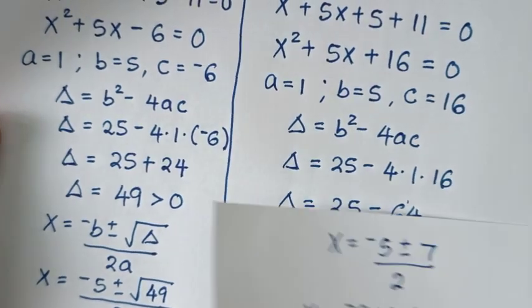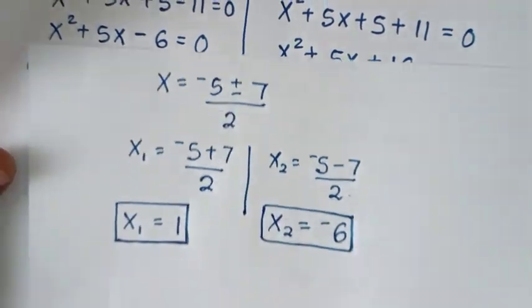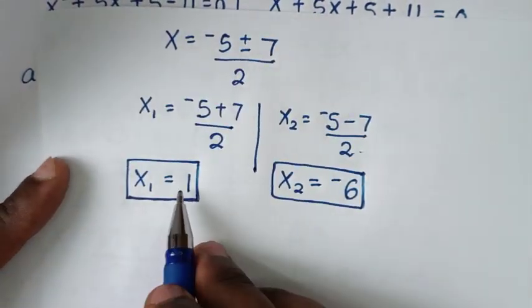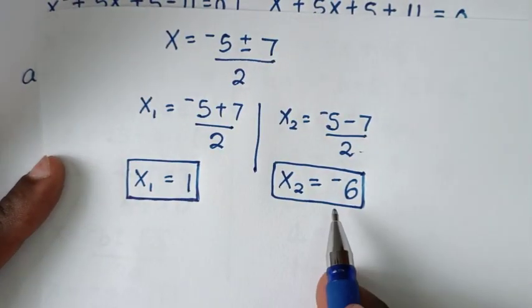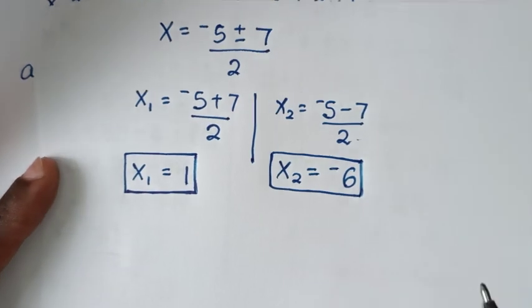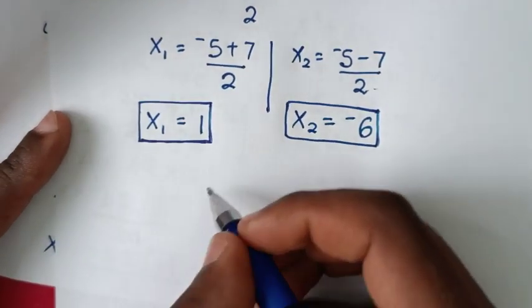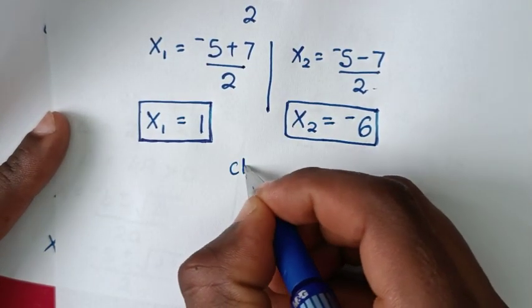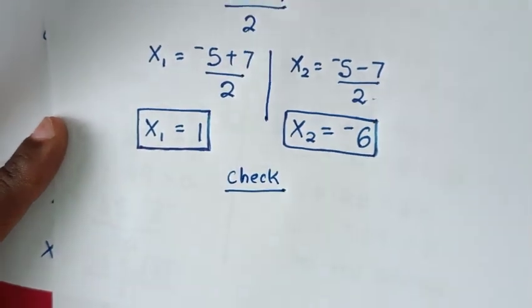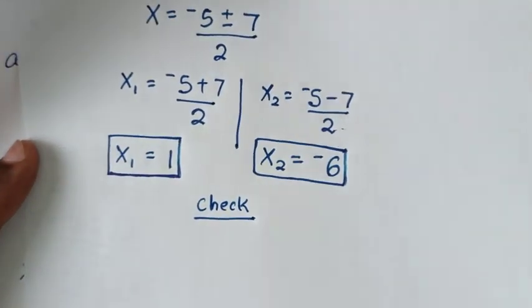So our only values of x are x equals 1 and x equals negative 6. Now let's check if these solutions are correct.